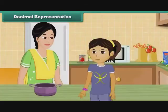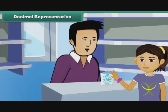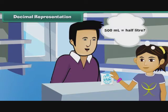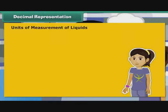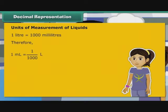Savita's mother asked her to get a half-litre milk pouch from Mother Dairy. When she went to buy it, the person at the booth handed her a 500 ml pouch. Savita was confused — is 500 ml the same as half a litre? To answer this, we must first understand the units used to measure liquids. 1 litre is equal to 1000 millilitres. Therefore, 1 ml is equal to 1 by 1000 litre, that is equal to 0.001 litre.